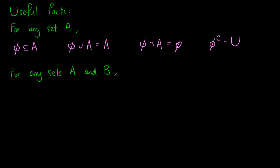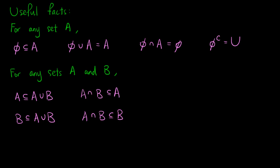Let's also write down some useful facts regarding subsets. A and B are always subsets of their union, and they always contain their intersection. This is clear from the definition. Since we know that any element in U must either be in A or not in A, but not both, the union of A and its complement is the universal set, and their intersection is empty.